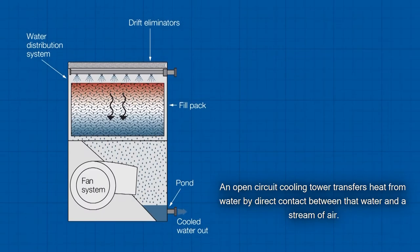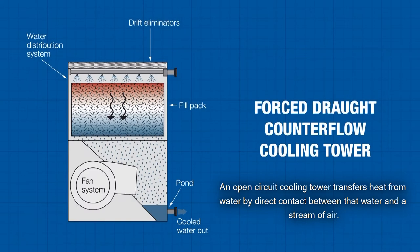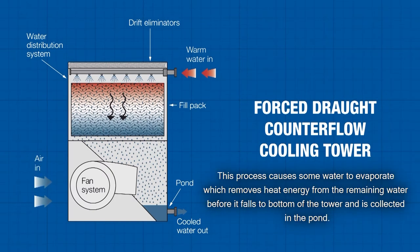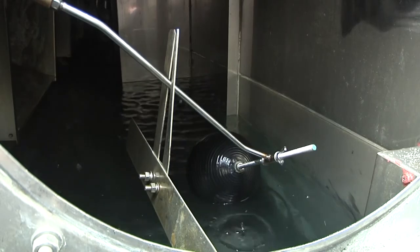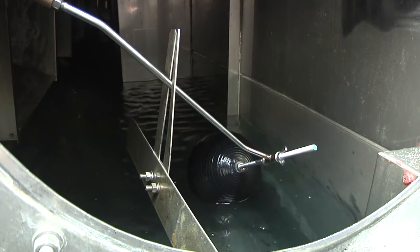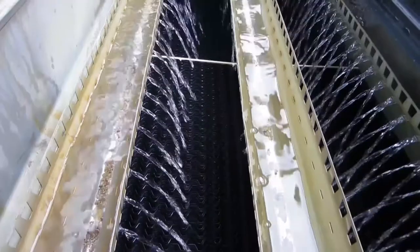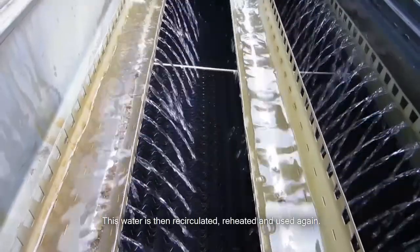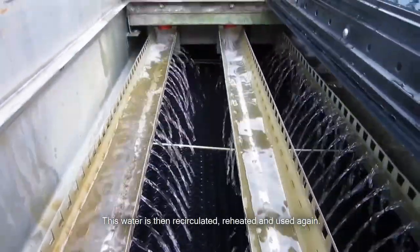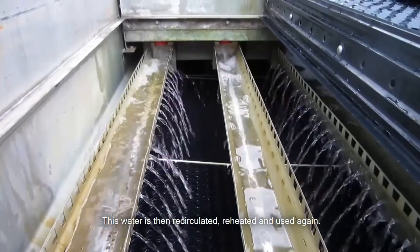An open circuit cooling tower transfers heat from water by direct contact between that water and a stream of air. This process causes some water to evaporate, which removes heat energy from the remaining water before it falls to the bottom of the tower and is collected in the pond. This water is then recirculated, reheated and used again.